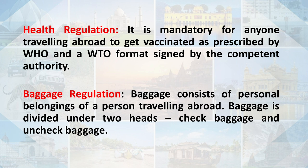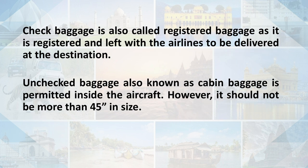There is another regulation related to baggage — that is baggage regulation. Baggage consists of personal belongings of a person travelling abroad. Baggage is divided under two heads: checked baggage and unchecked baggage. Checked baggage is also called registered baggage as it is registered and left with the airlines to be delivered at the destination. Unchecked baggage, also known as cabin baggage, is permitted inside the aircraft. However, there are certain specifications related to the size of the checked-in baggage.